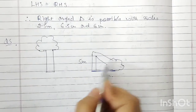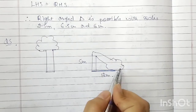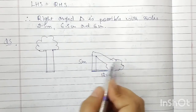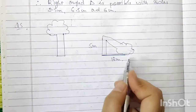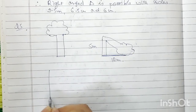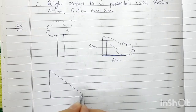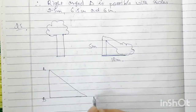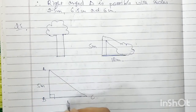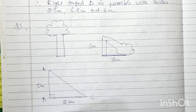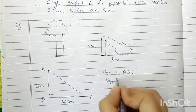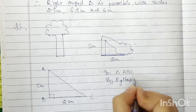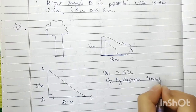This is a right angle triangle. The hypotenuse is AC, which represents the broken part of the tree. We draw the mathematical diagram — right angle triangle ABC with right angle at B. This is 5 meters, this is 12 meters, and we have to find AC. In triangle ABC, by Pythagoras theorem: